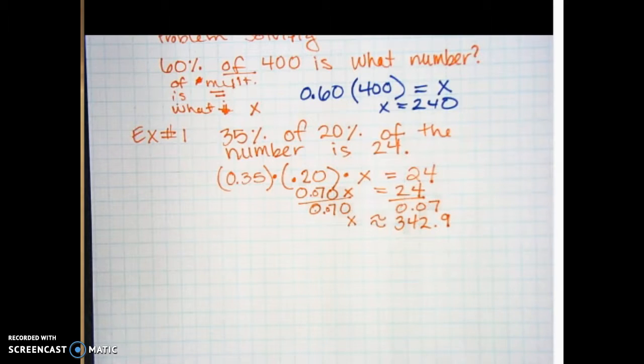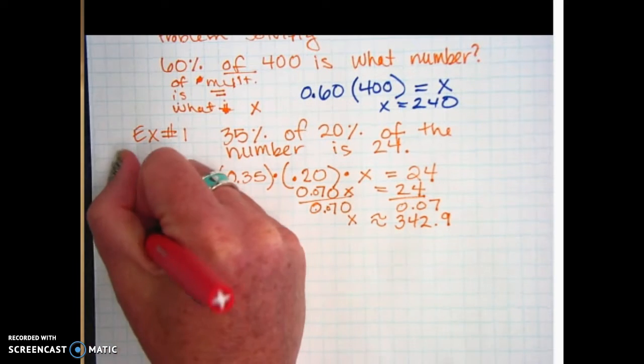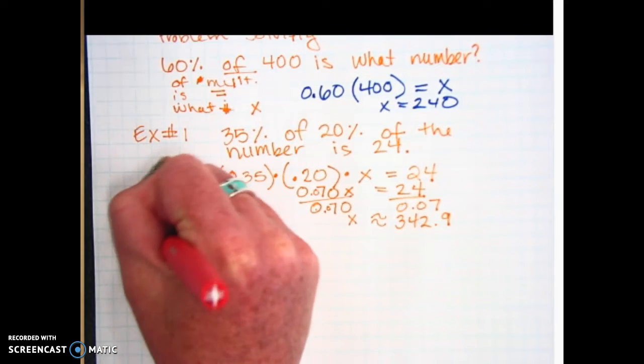Any questions on example number one? So you will see some a little bit trickier, but basically, as it's worded out, when you see 'of', write multiplication, when you see 'is', put an equal sign, 'what number', put an X. If it gets more complicated than that and you need help, let me know.